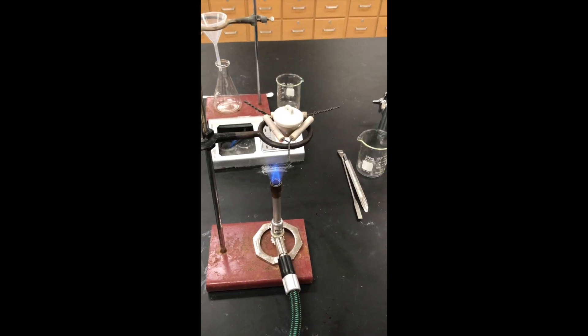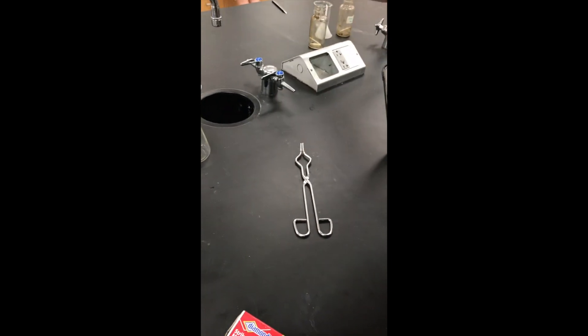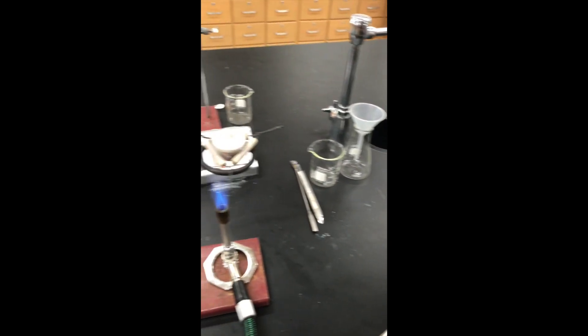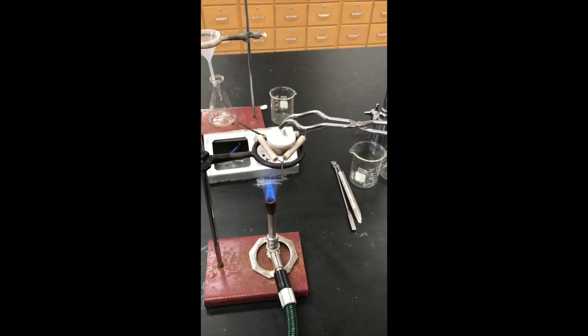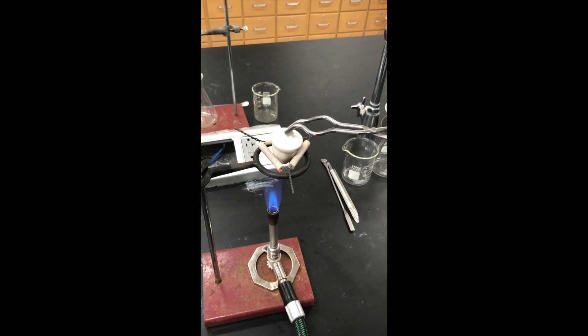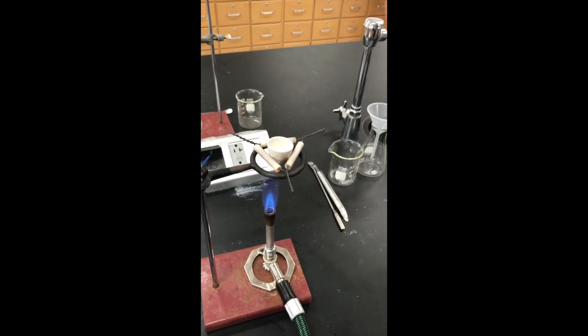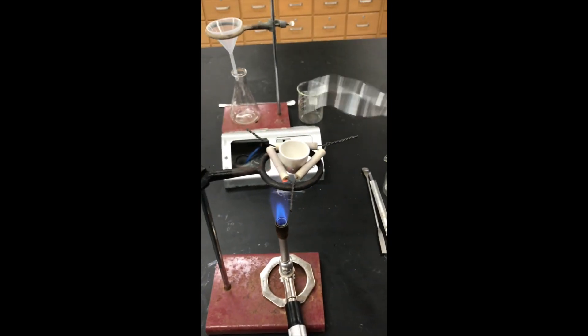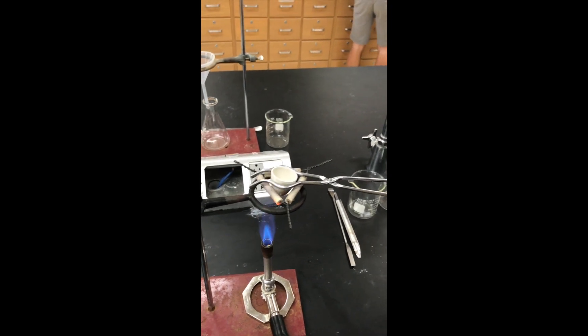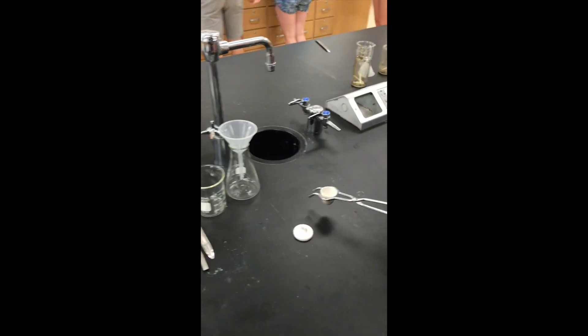When you want to remove your crucible, you will use the tongs to get the crucible off the hot flame. Be aware that you do not remove the crucible with your hands. I've done that before. It's very hot. You use the tongs like that and set it down safely.